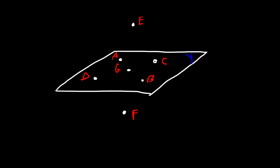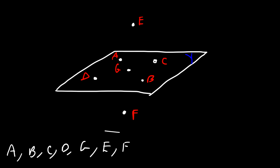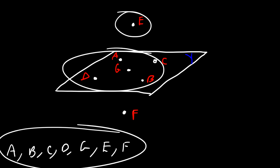The coplanar points are the points lying on plane Y. So A, B, C, D, and G are coplanar points. The non-coplanar points would be those five along with E or along with F. Combined, those seven are non-coplanar points — because once you add E or F to the mix, they are not all on the same plane.